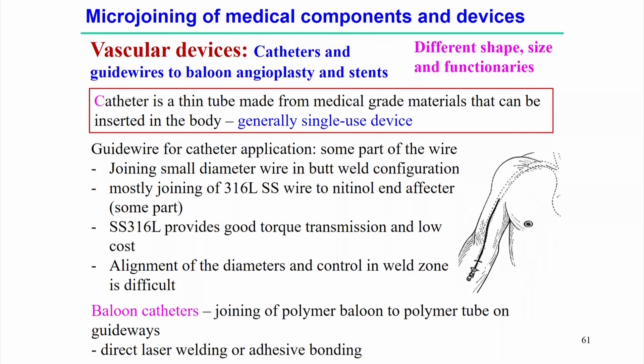For single-use devices, high-cost nickel-titanium alloy can be used. Sometimes it is necessary to replace part of the nickel-titanium wire or tube with a stainless steel tube, which is a cost-effective methodology. In that case, it is necessary to join the stainless steel tube or wire to the nickel-titanium alloy. For guide wires in catheter applications, some part of the wire may be joined as a small-diameter wire in butt weld configuration.